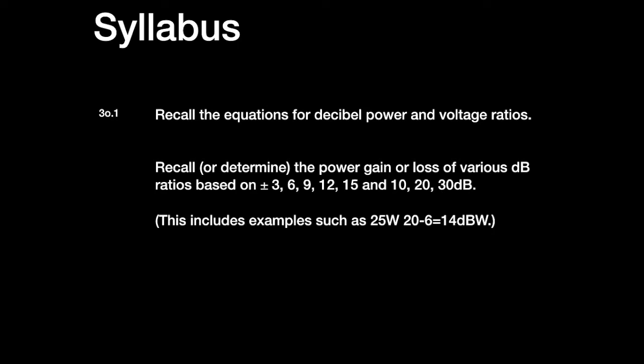Let's move on to what we need to study for the advanced examination for the RSGB. The syllabus says that we should recall the equations for decibel power and voltage ratios. We should recall or determine the power gain or loss of various dB ratios based on plus or minus 3, 6, 9, 12, 15, and 10, 20, and 30 dBs. This includes examples such as 25 watts equals 20 minus 6, or 14 dBWs.